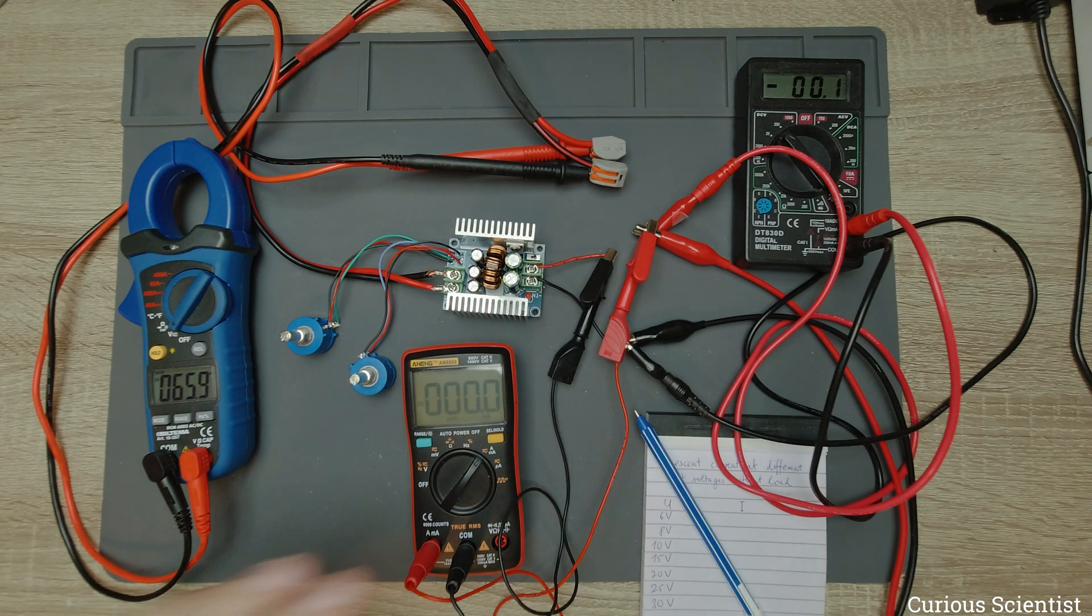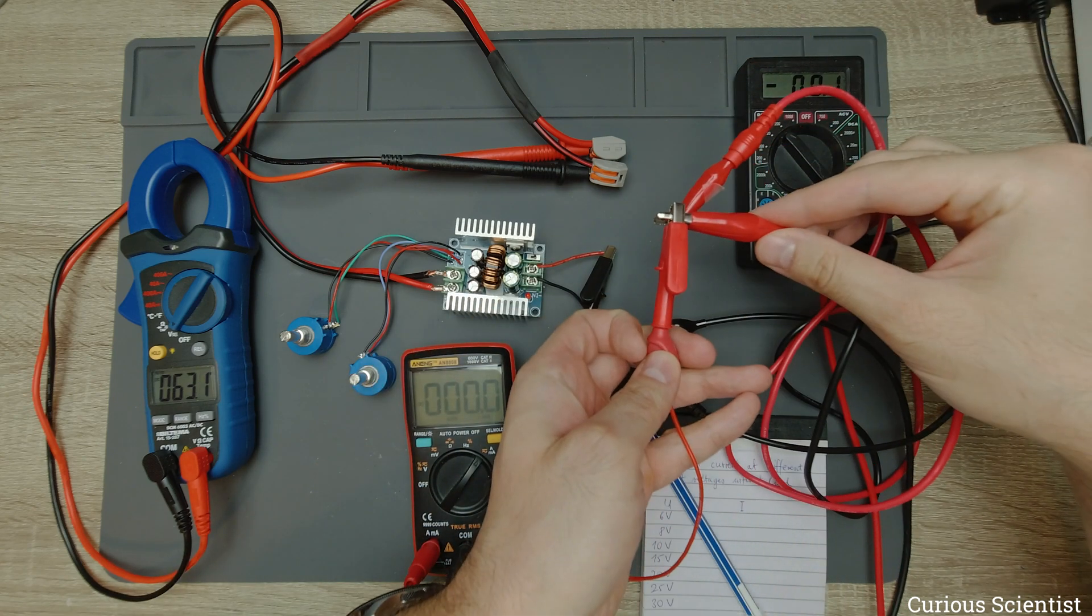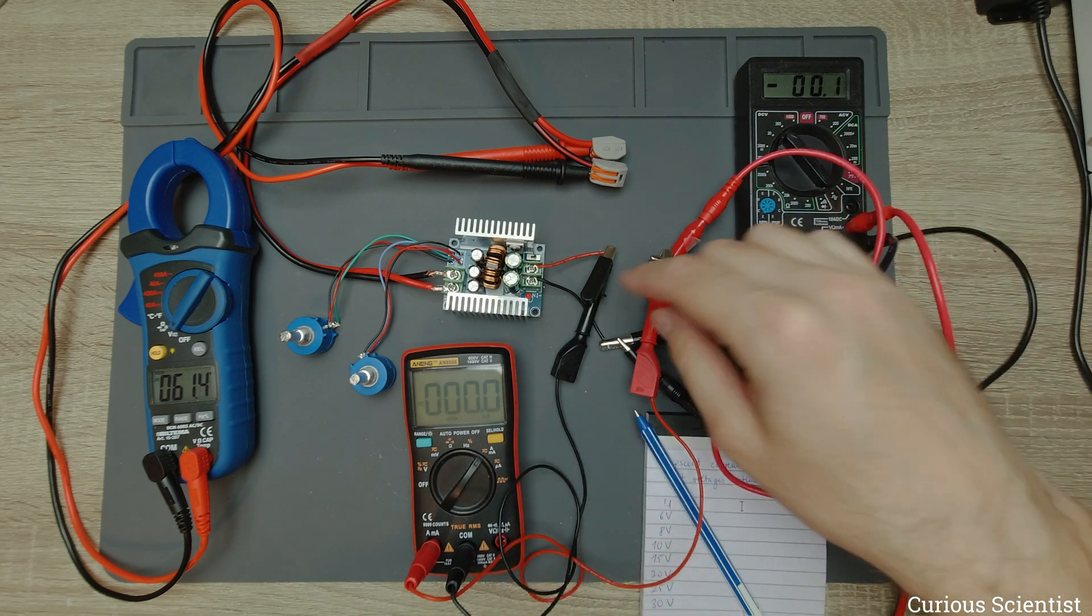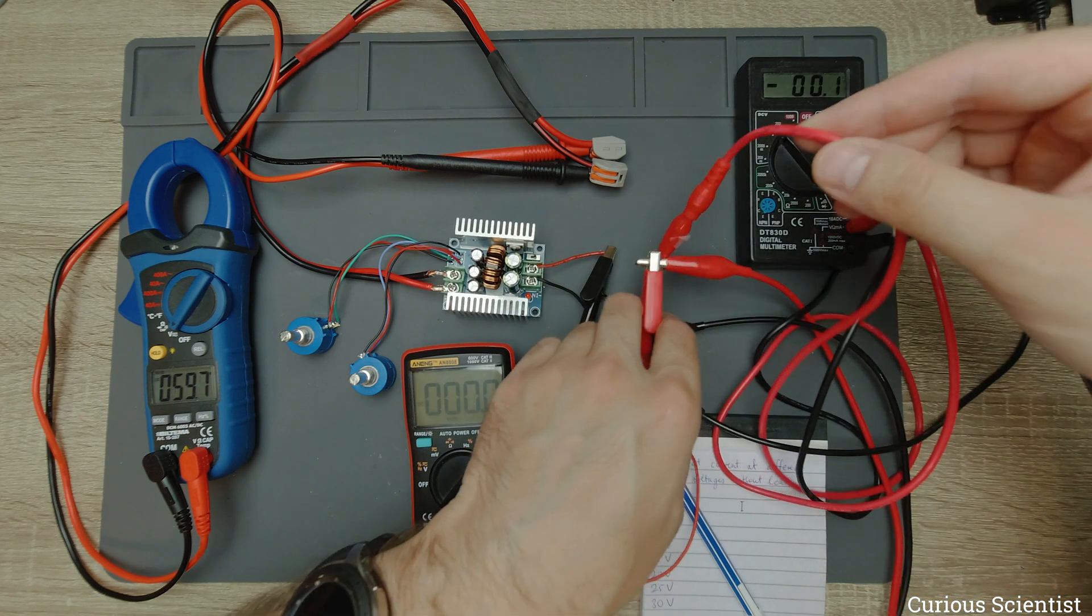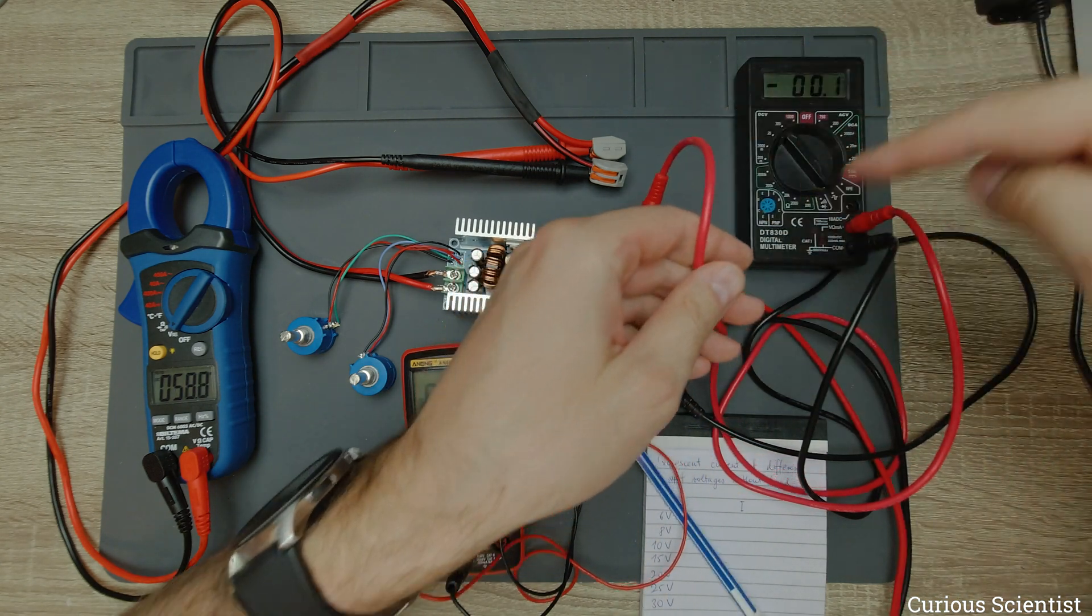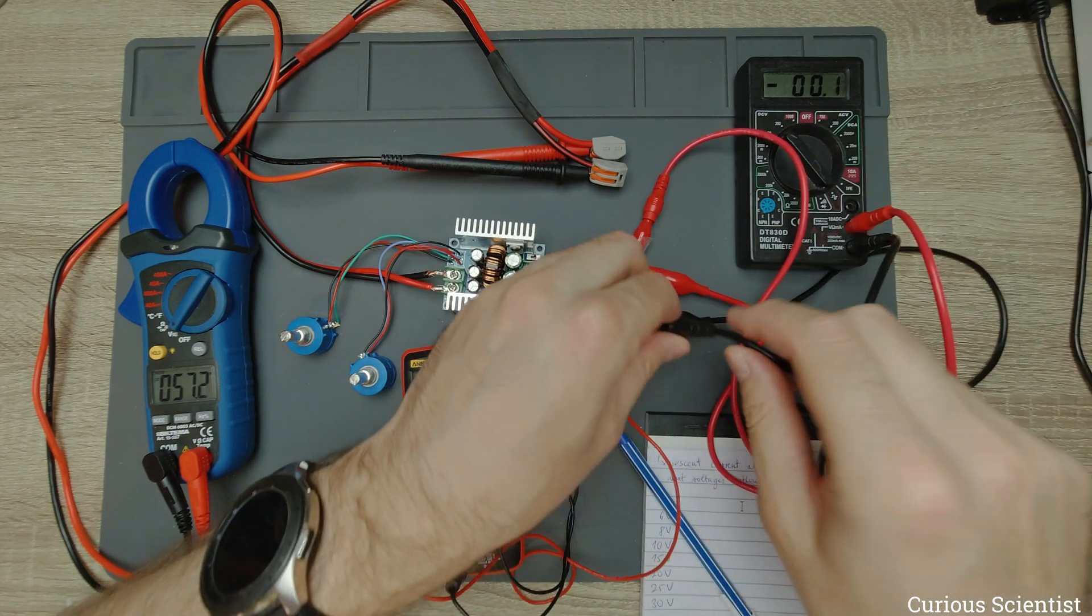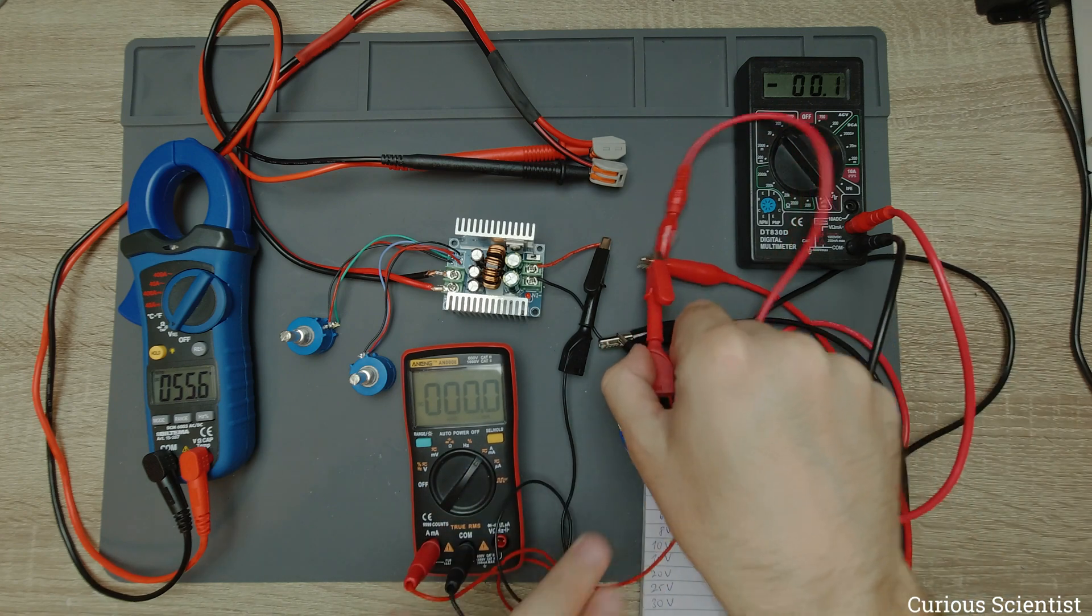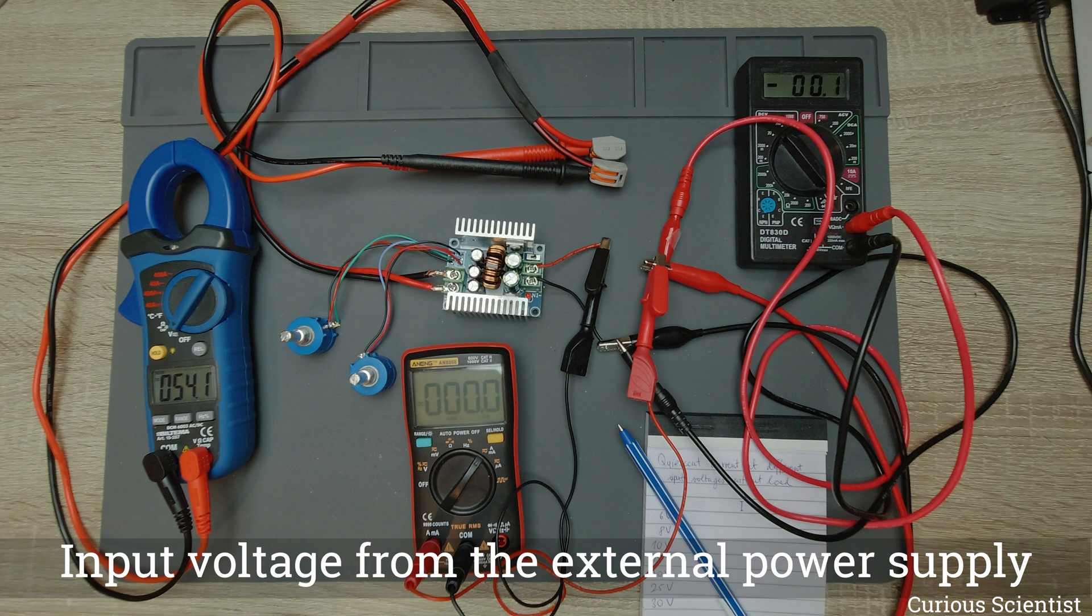How I wired everything is that we have these two clips, this guy here and this guy here. This is the input voltage or the power supply which will feed the power to the input of this converter. Then this wire here is going to this multimeter, as well as this wire here, so black and red clamps, and they are measuring the voltage, so parallel connection.